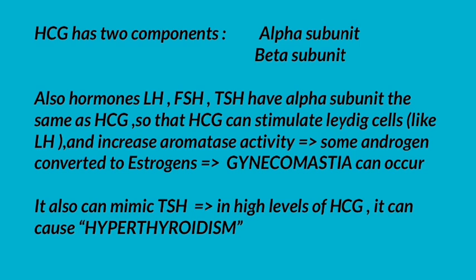Hormones LH, FSH, and TSH share the same alpha subunit as HCG, so HCG can stimulate Leydig cells like LH and increase aromatase activity. Some androgen is then converted to estrogens, causing gynecomastia. HCG can also mimic TSH, and at high levels can cause hyperthyroidism.